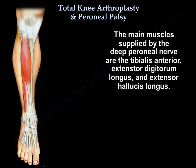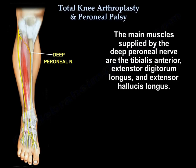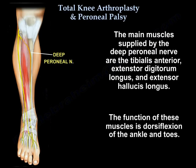The main muscles supplied by the deep peroneal nerve are the tibialis anterior, extensor digitorum longus, and extensor hallucis longus. The function of these muscles is dorsiflexion of the ankle and toes.